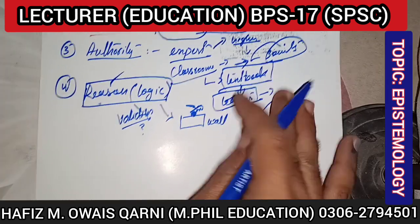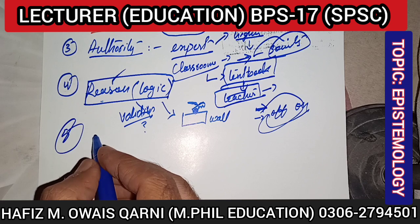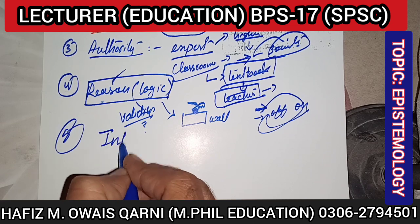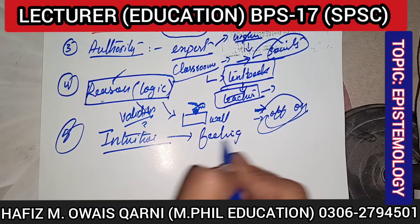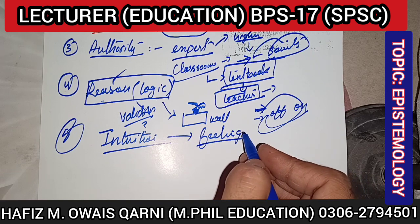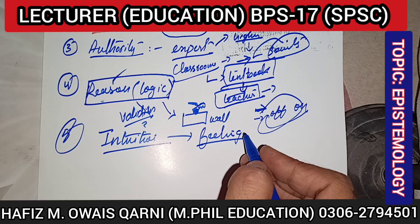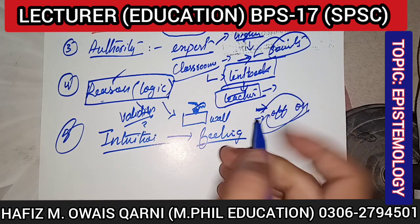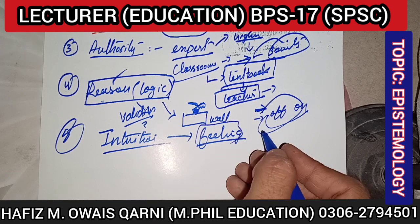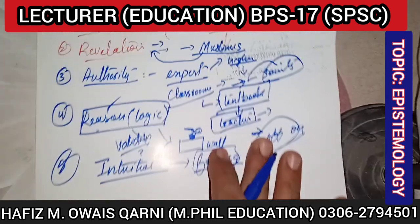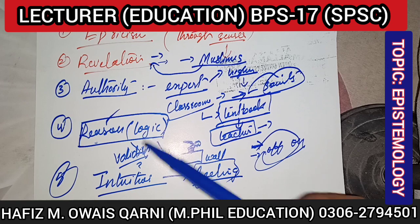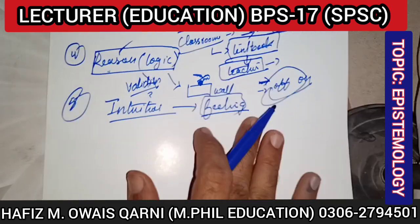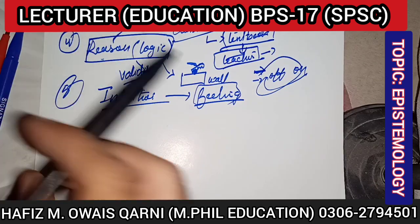The fifth and last aspect of epistemology is intuition. Intuition means understanding through feelings, without conscious reasoning. You rely directly on your observations and feelings. So these are the five aspects of epistemology: empiricism, revelation, authority, reason, and intuition.